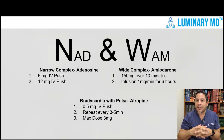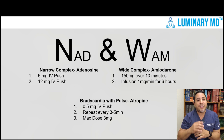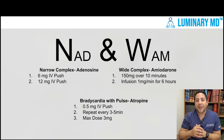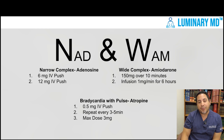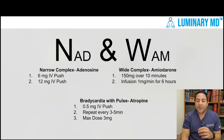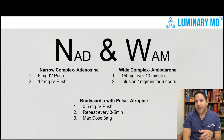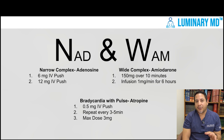The dose for adenosine for narrow complex is 6 milligrams IV push. If that doesn't work, then you do 12 milligrams IV push. The dose for wide complex tachycardia for amiodarone is going to be 150 milligrams over 10 minutes, and then you can do an infusion for six hours at 1 mg per minute. For adult bradycardia with a pulse, it's atropine — 0.5 milligrams IV, and you can do that every three to five minutes for a maximum of three milligrams.